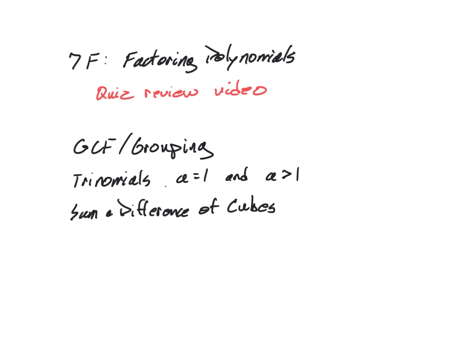In this video I'm going to review standard 7f, which is basically about factoring polynomials. We've looked at factoring using greatest common factor and grouping, factored trinomials where a equals 1 and where a is greater than 1, and also looked at the sum and difference of cubes, so I'm going to review all of these.